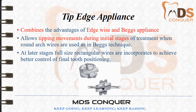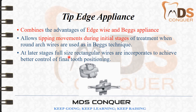The tip edge appliance combines the advantages of both the edgewise and Begg's appliances. It allows tipping during the initial stages of treatment when round wires are used, as in Begg's technique, and at later stages uses a full-size rectangular wire to achieve better control of final tooth position. You can use both round and rectangular wires with this bracket system — at early stages tipping movements are allowed, and at later stages bodily movements can be achieved.